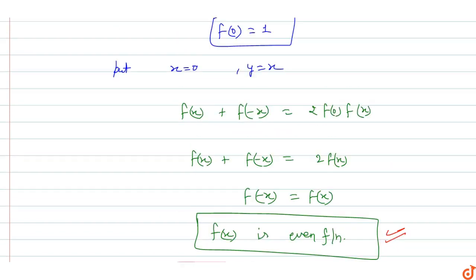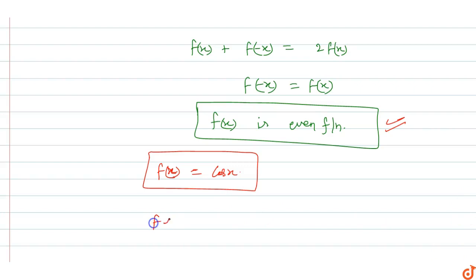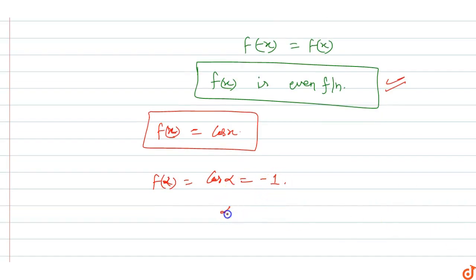Now f(α): if f(x) = cos(x), then f(α) = cos(α). And f(α) = -1, so cos(α) = -1, which means α = π.